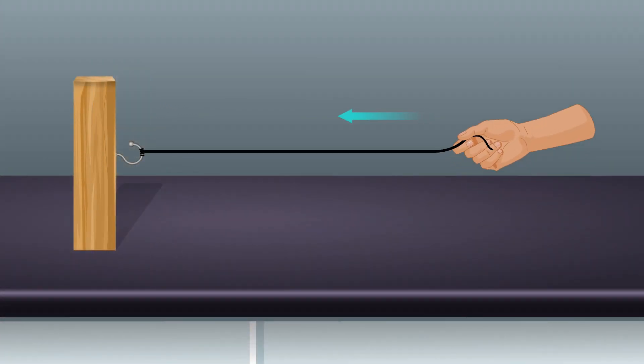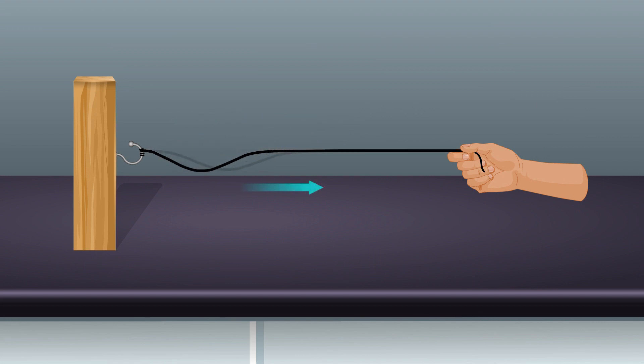Give a transverse horizontal jerk to the string and create pulse. Observe what happens to the pulse at the fixed end.